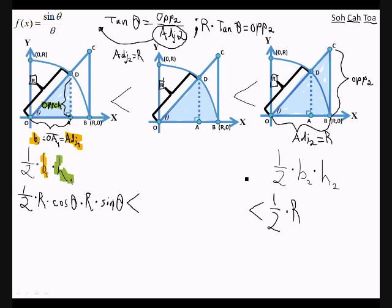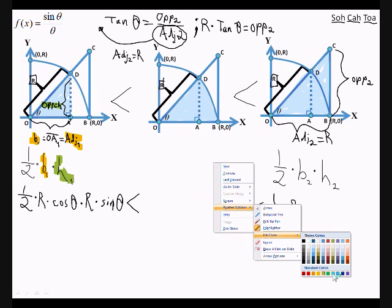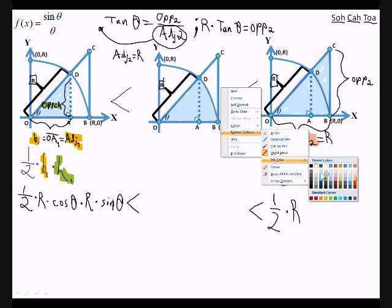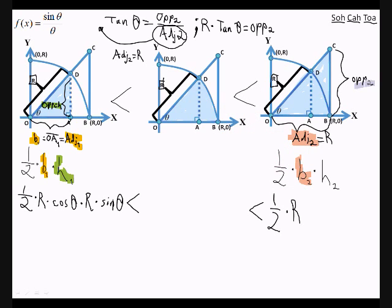R times the tangent of theta is equal to the opposite side, which is the height. So we have one half, and the base of our triangle here is basically just the adjacent, which is equal to R. This opposite 2 is equal to the height, and we can now substitute it — which gives us R times the tangent of theta.